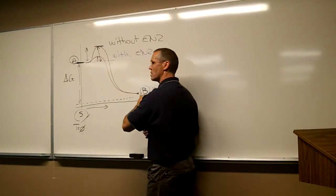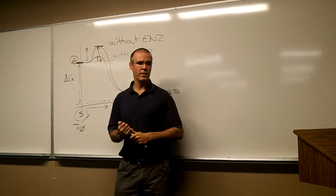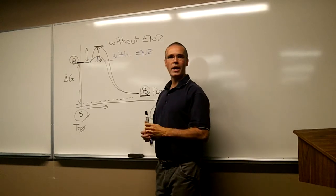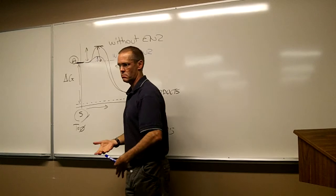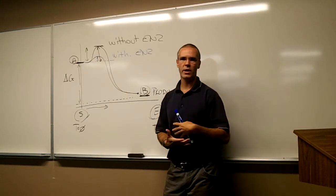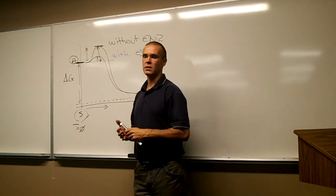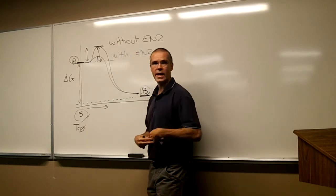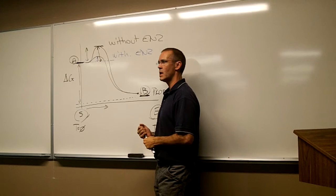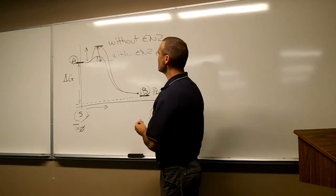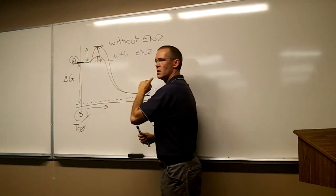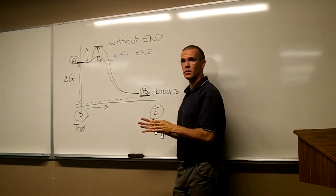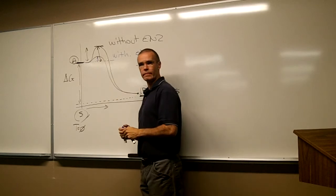I heard once — and I don't know if this claim is true — but somebody once said a hamburger would eventually get digested with acids and whatever we have in our stomach, but it would take, I don't know, 10 days or something like that. Of course, we digest our food very quickly. Because why? Well, we have enzymes. So enzymes, by reducing this activation energy, allow reactions to happen much, much, much faster than they normally would. That's what it does.